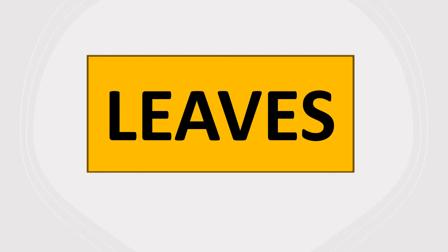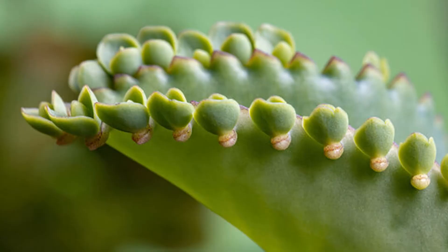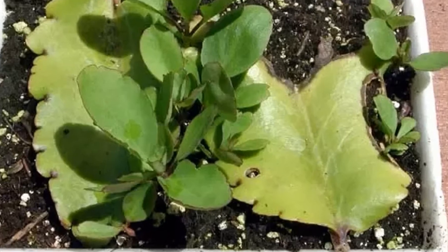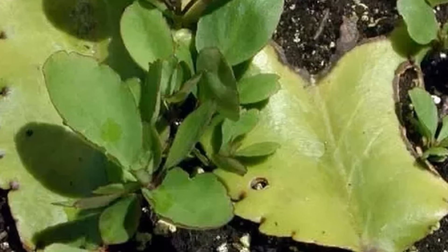Leaves. The leaves of bryophyllum have several buds along their margins. New plants grow from these leaf buds when they fall onto moist soil.